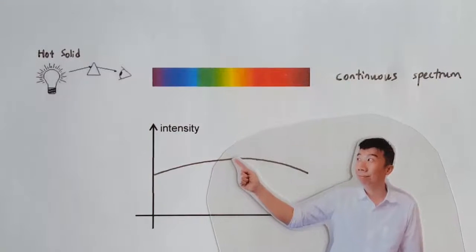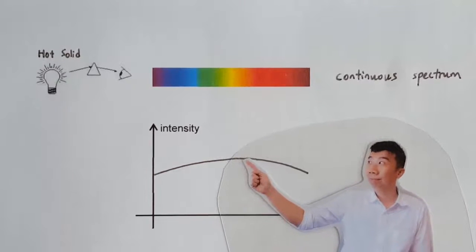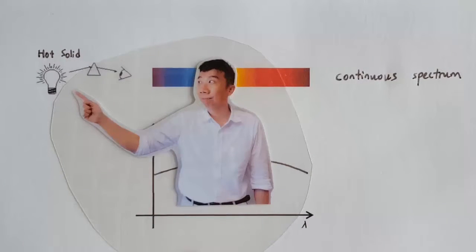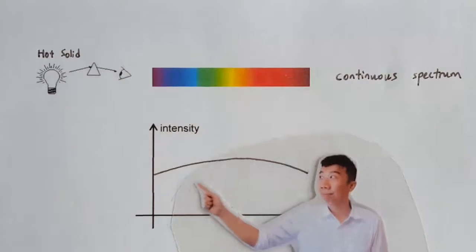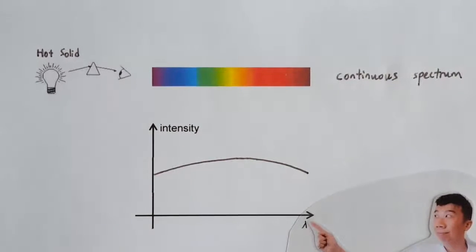The spectrum may peak at yellow or at red or anywhere. The key point is, a hot solid emits light continuously across all the wavelengths.